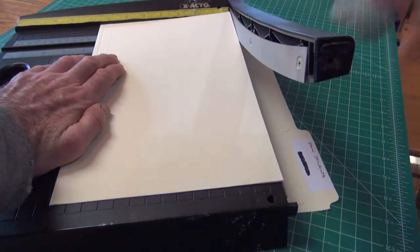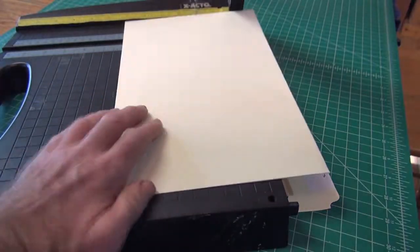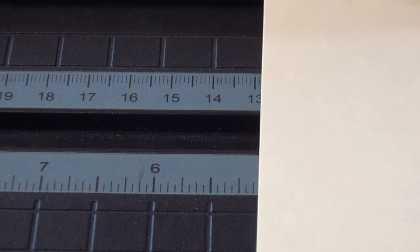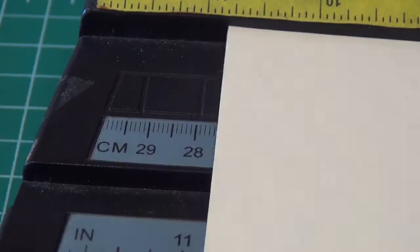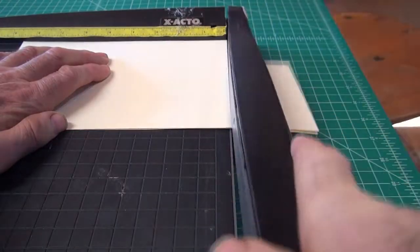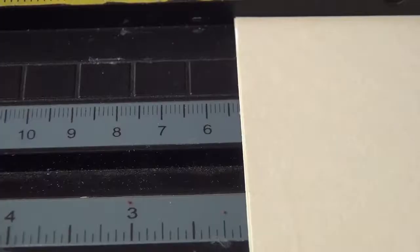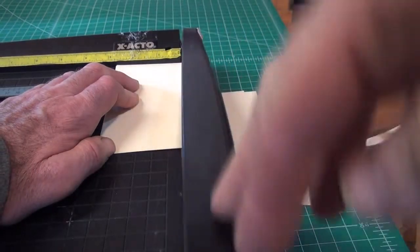So I cut lengthwise first, 13 centimeters wide, then I trim the end at 29 centimeters, then 22, 15, and 8. Then I have to turn 180 degrees and trim the last side.